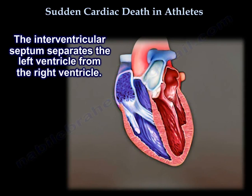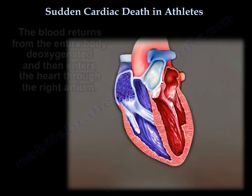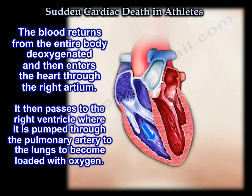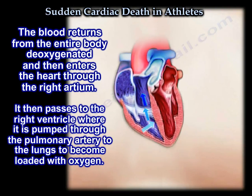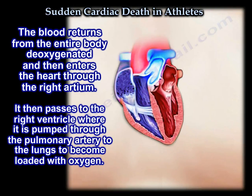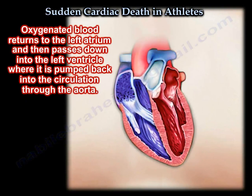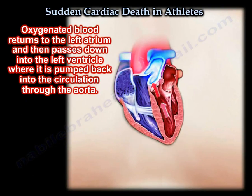The interventricular septum separates the left ventricle from the right ventricle. The blood returns from the entire body deoxygenated and enters the heart through the right atrium. Then it passes to the right ventricle where it's pumped through the pulmonary artery to the lungs to become loaded with oxygen.